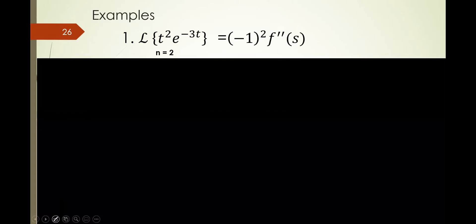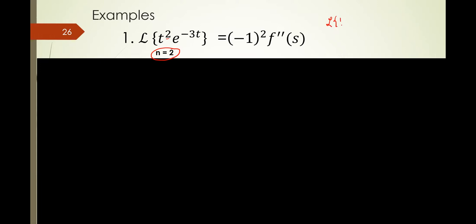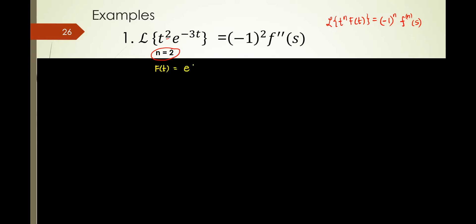Let's try the first example. Looking at the given, the n is 2. According to the formula, the Laplace of t^n times f(t) equals negative 1 raised to n times the nth derivative of F(s). So what is the f(t) here? Isn't it that f(t) is e to the negative 3t? Because for it to match the formula, there is a t to the n.